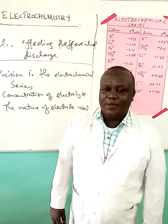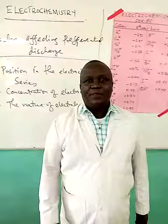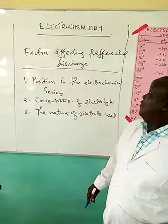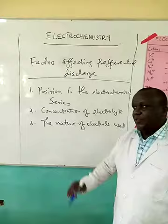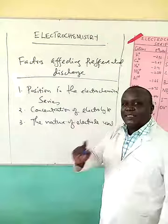Good afternoon once again. Welcome to Electrochemistry. I am teacher Bernard Echeng. Today we want to look at the factors that affect the preferential discharge — what is supposed to be discharged at the electrode. One of the factors that affects preferential discharge is the position of that chemical species in the electrochemical series.